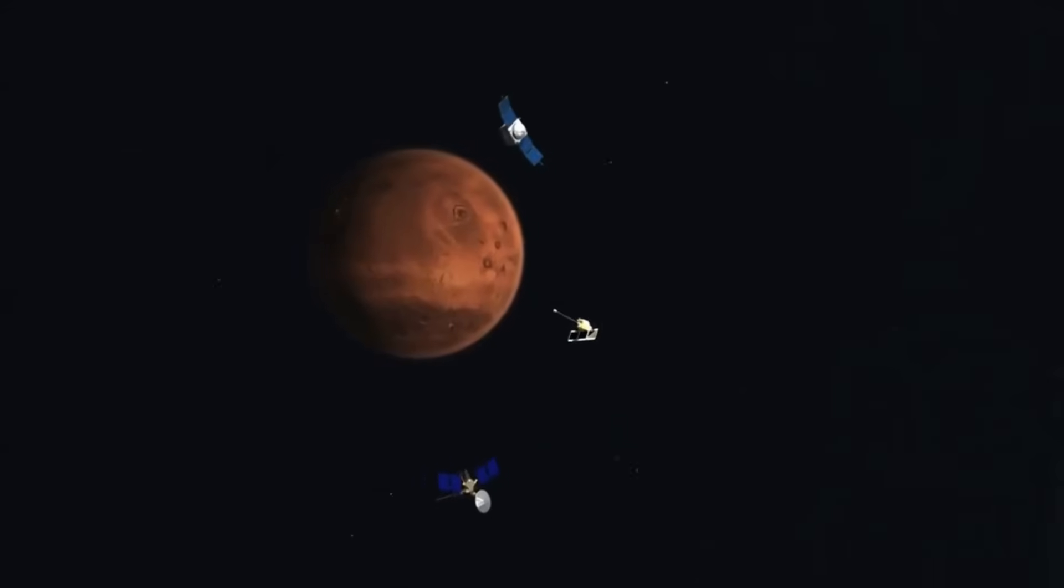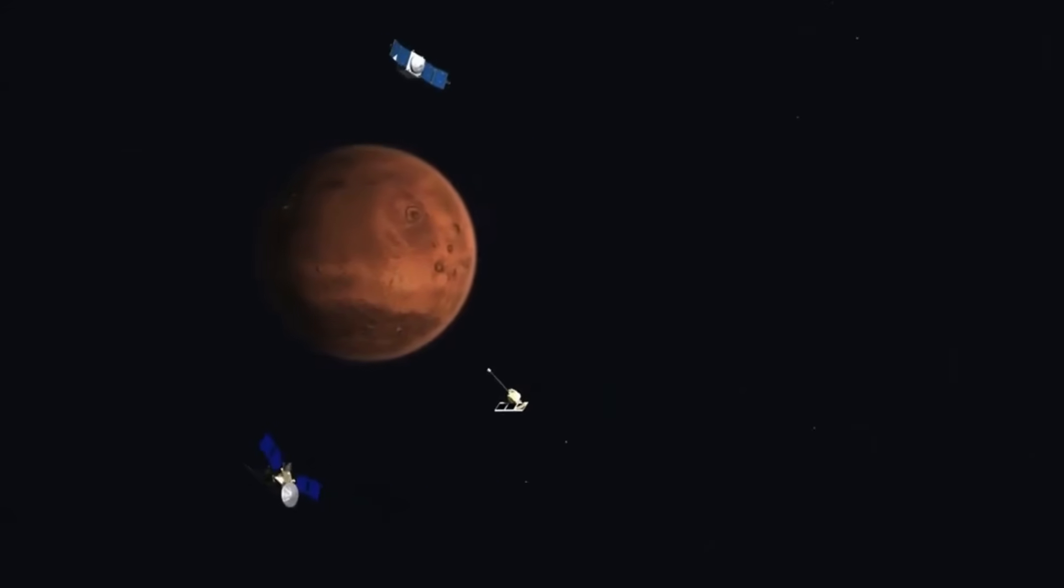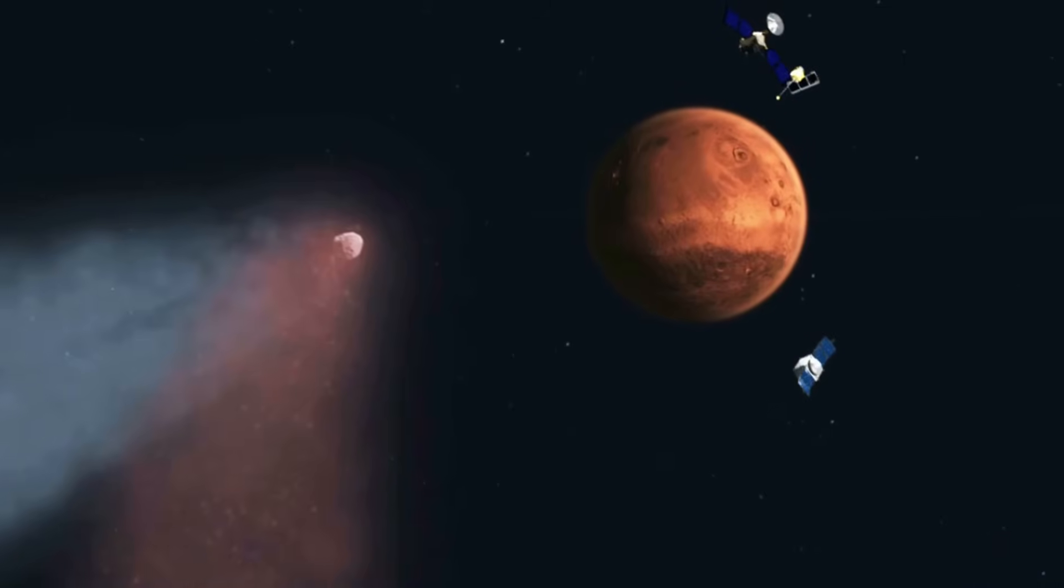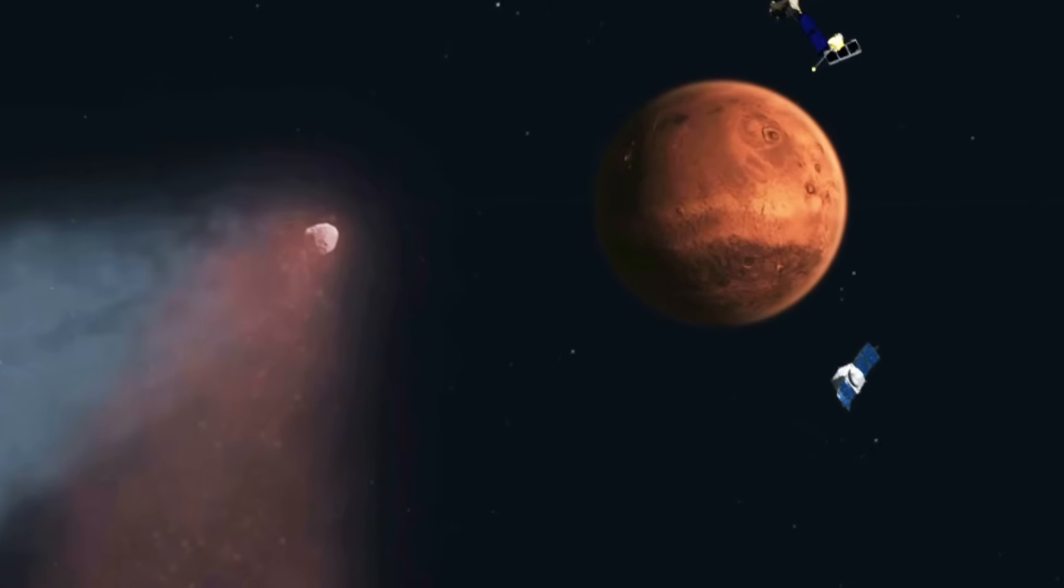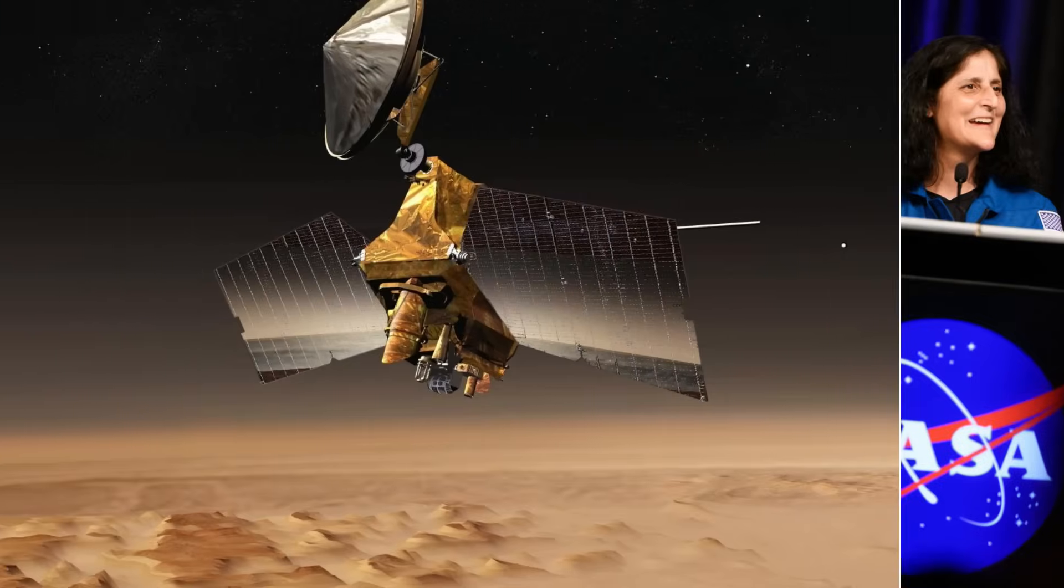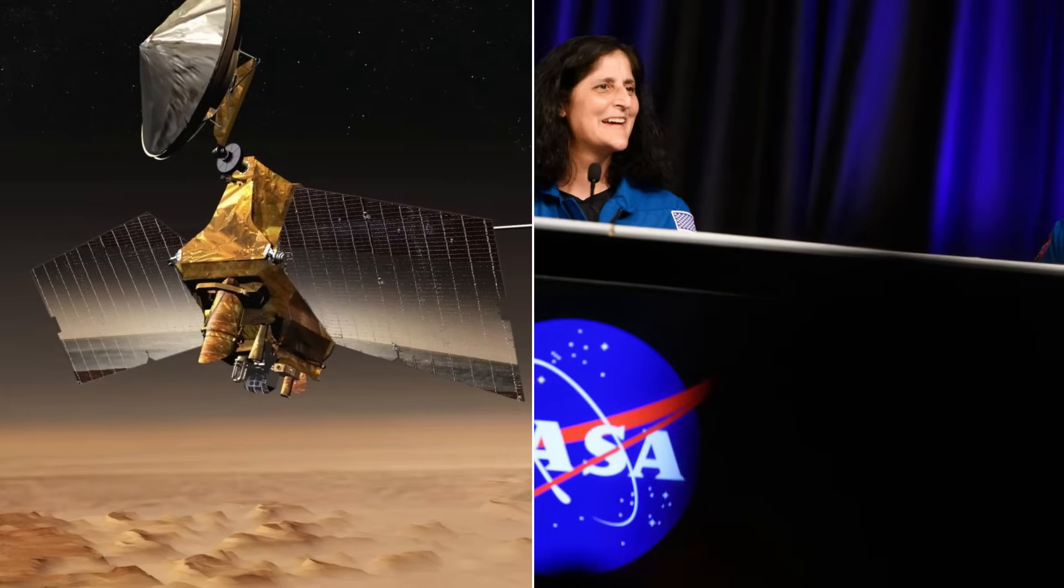The Mars flyby was the closest any spacecraft had ever come to an interstellar object. With no public images, the data gap became a flashpoint for frustration and suspicion. Scientists pointed out that previous Mars Reconnaissance Orbiter images of comets and asteroids were released within days, not weeks.